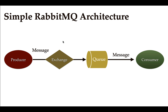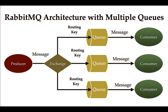In a complex application we need to create multiple queues in the RabbitMQ broker. In a RabbitMQ architecture with multiple queues, the producer sends a message to the exchange, the exchange uses a routing key to route that message to the respective queues, and the consumer reads messages from the respective queues.